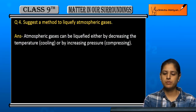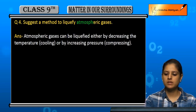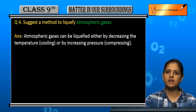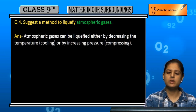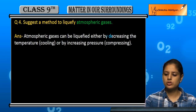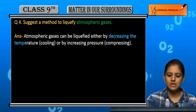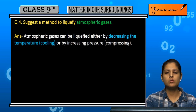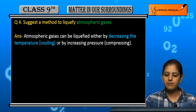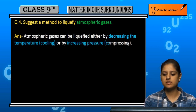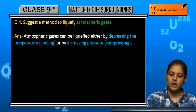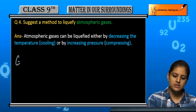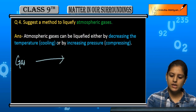Question number 4: suggest a method to liquefy atmospheric gases. To liquefy gases, we can either decrease the temperature — that is, cool them — or increase the pressure, meaning we compress them. Either of these methods can change a gas into a liquid.